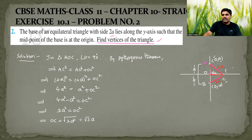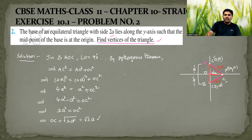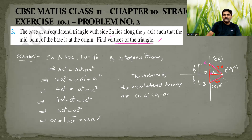Therefore, you can easily find the coordinates of point C. This point is on the x-axis, so its y-coordinate is 0 and the x-coordinate is √3·a. Therefore the coordinates are (√3a, 0). The three vertices of the equilateral triangle are: (0, a), (0, −a), and (√3a, 0).